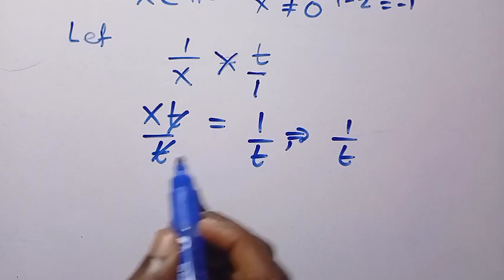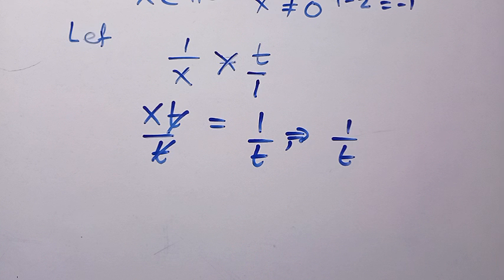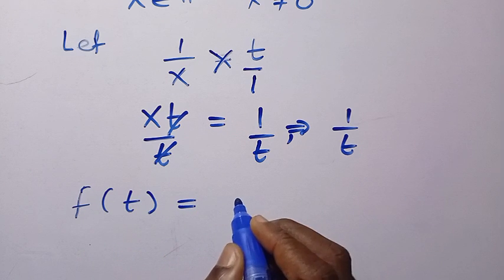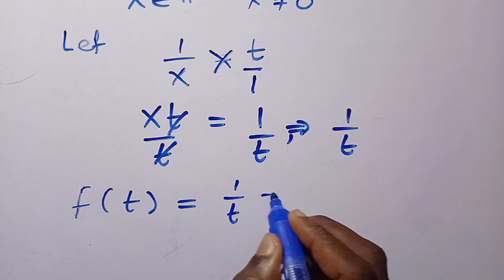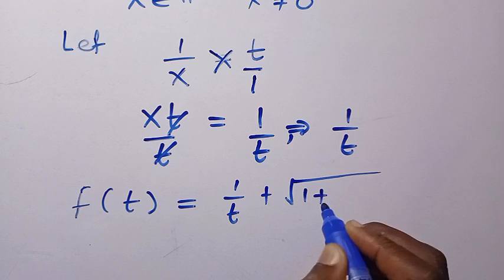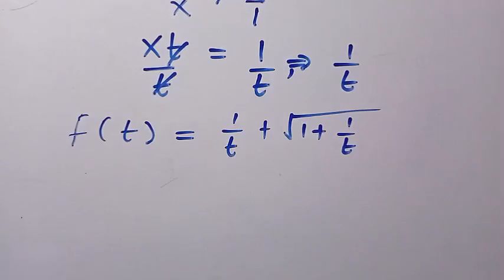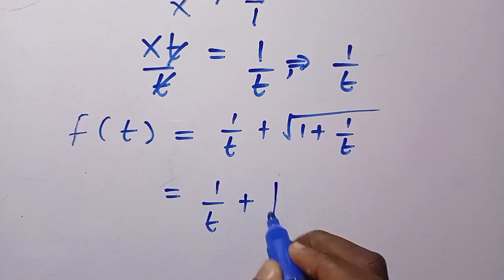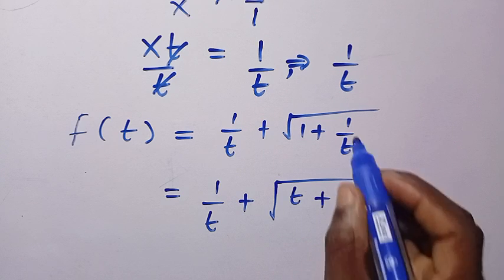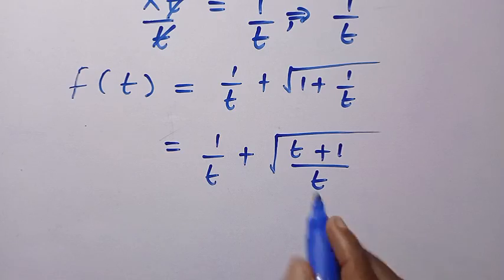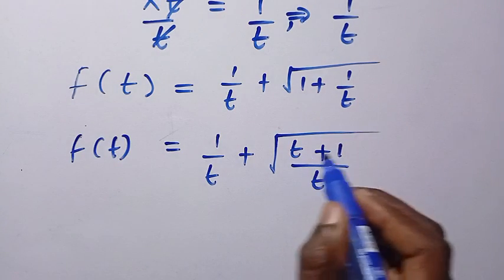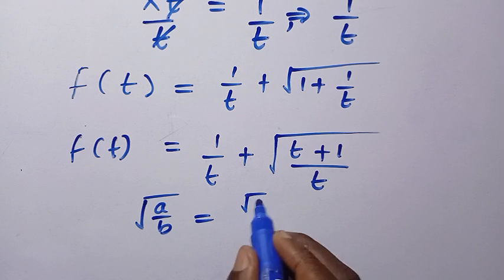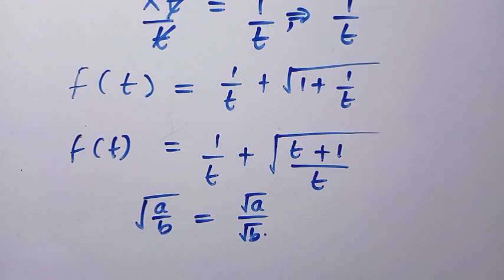Substituting back into the given equation, replacing 1/x with t and x with 1/t, we get: f(t) = 1/t + √(1 + 1/t). To simplify the expression inside the square root, we find the LCD: 1 + 1/t = (t+1)/t. So f(t) = 1/t + √((t+1)/t). Using the rule √(a/b) = √a/√b, this becomes f(t) = 1/t + √(t+1)/√t.